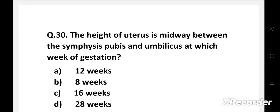Next question. The height of uterus is midway between the symphysis pubis and umbilicus at which weeks of gestation - option A: 12 weeks, B: 8 weeks, C: 16 weeks, D: 28 weeks.